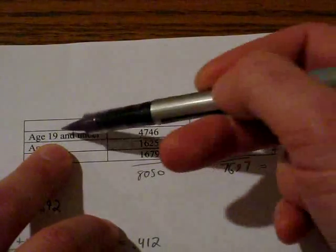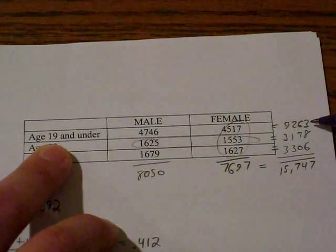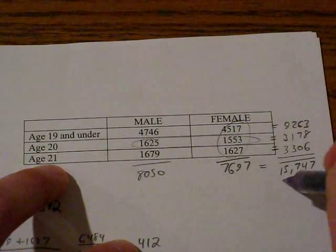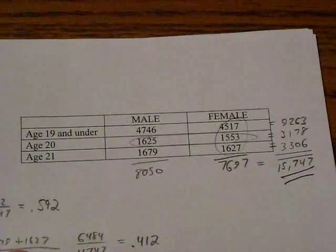It's also nice to know the row totals here too, how many people were 19 and under, 20, and 21. And that gives me a grand total of 15,747.